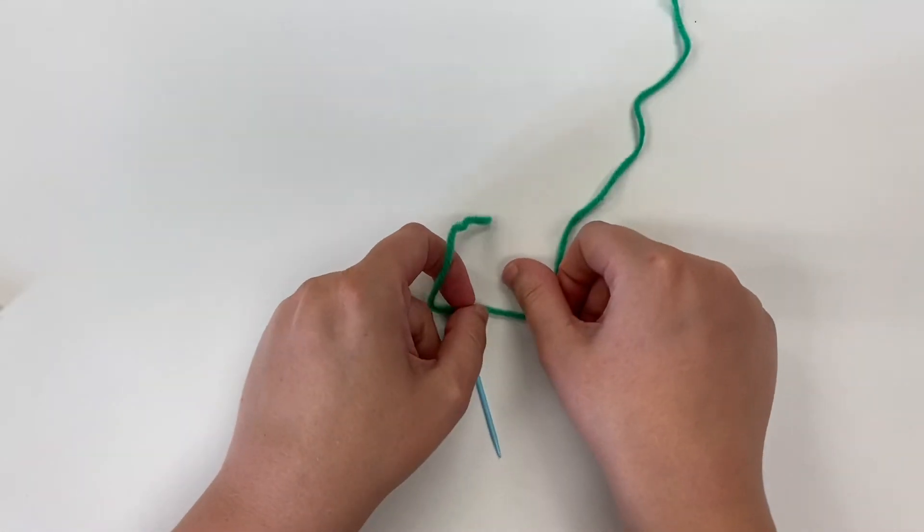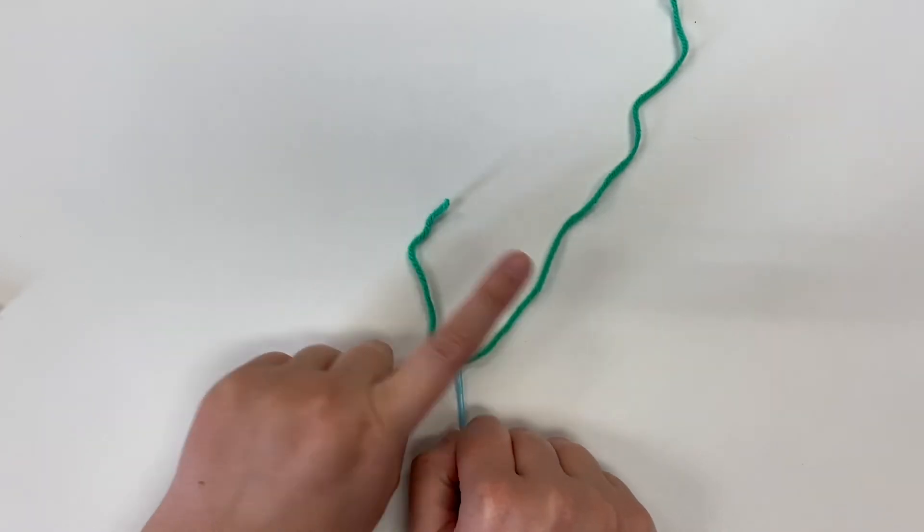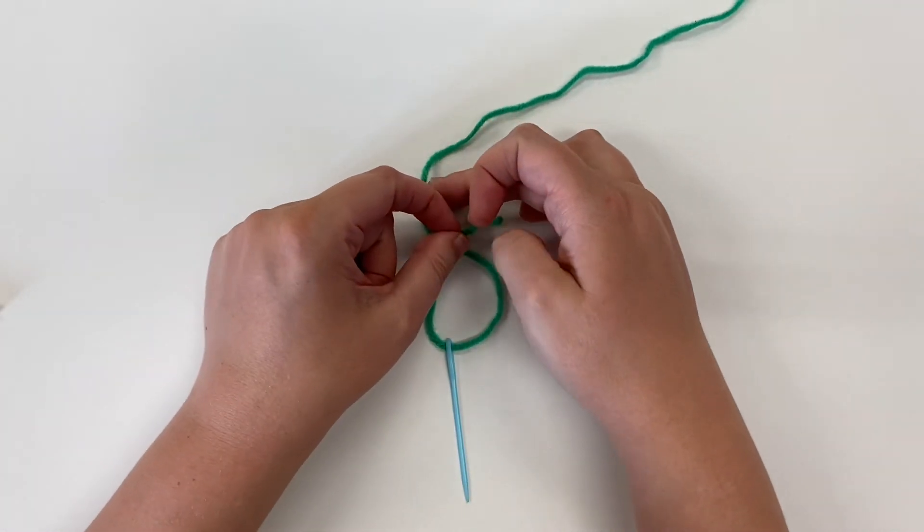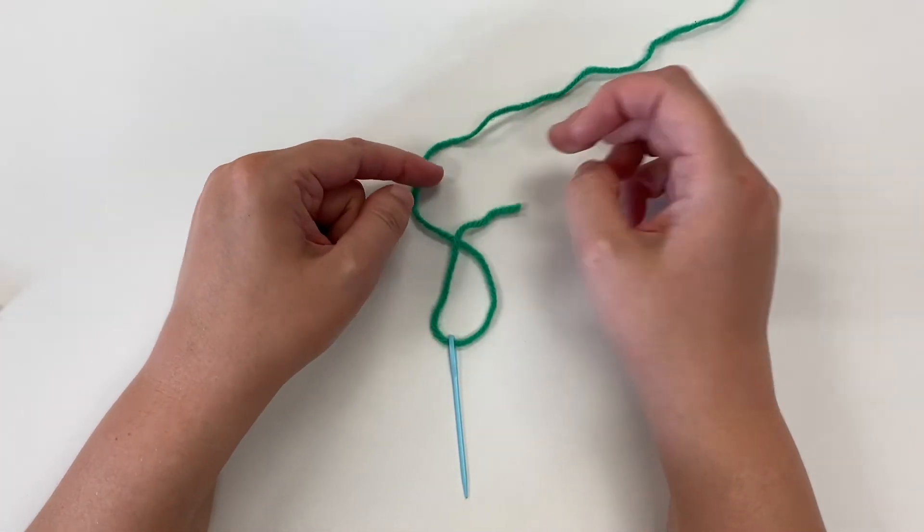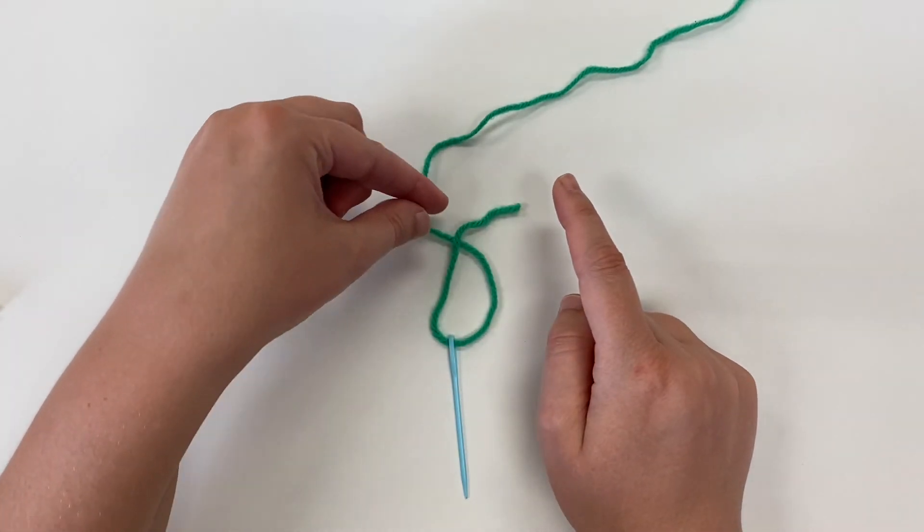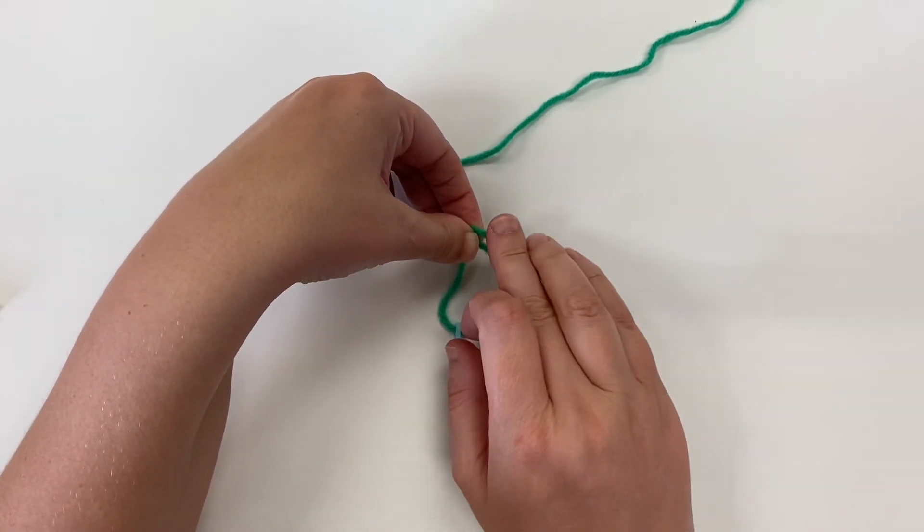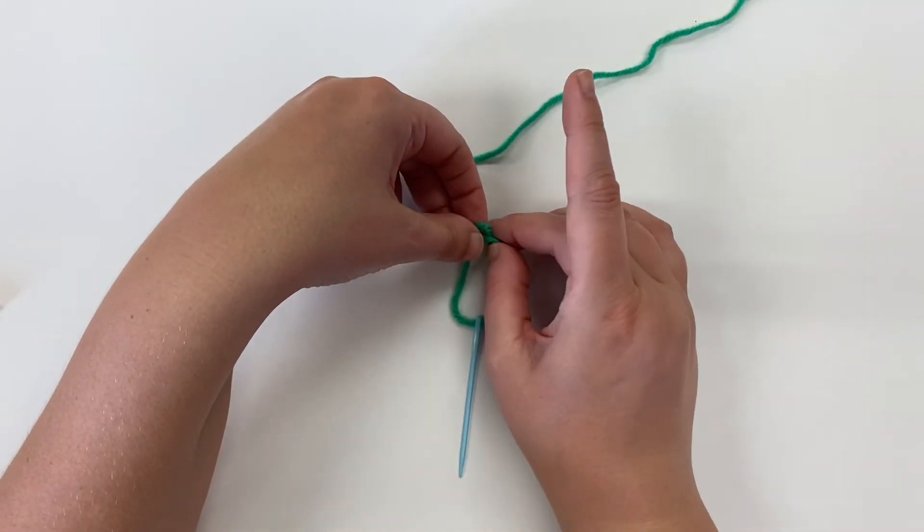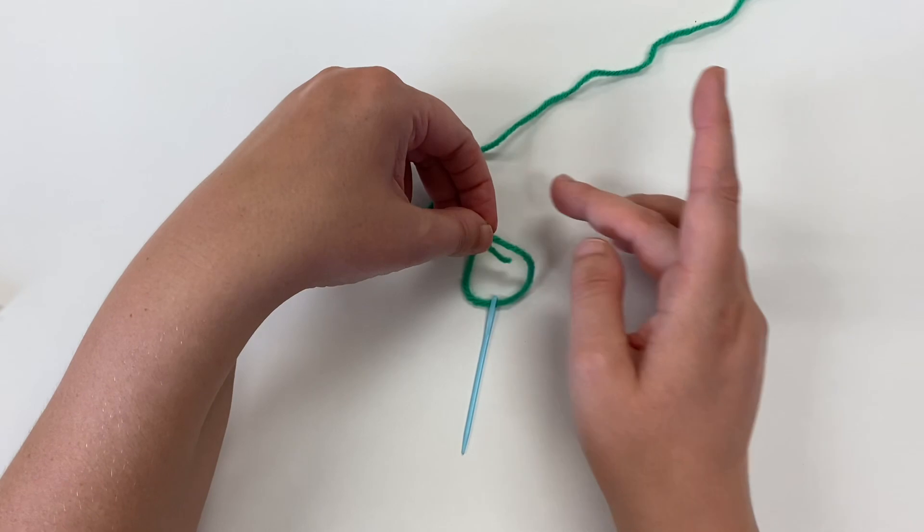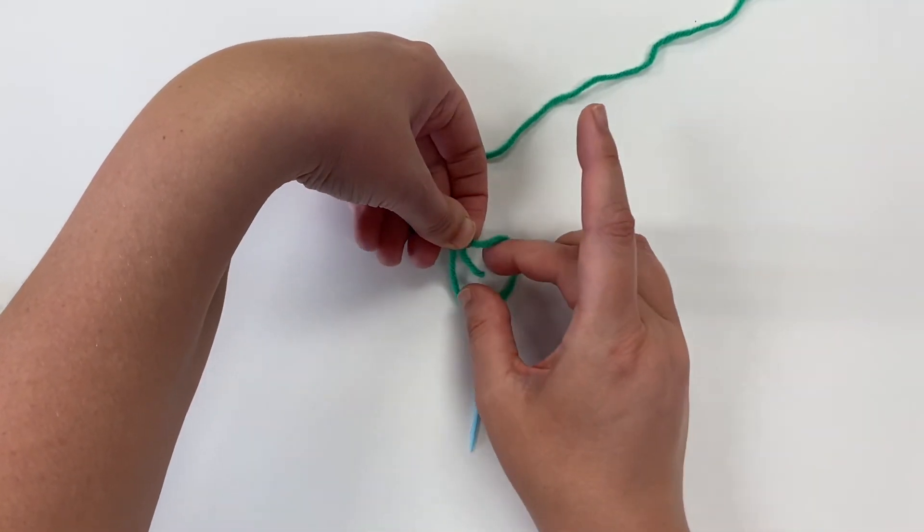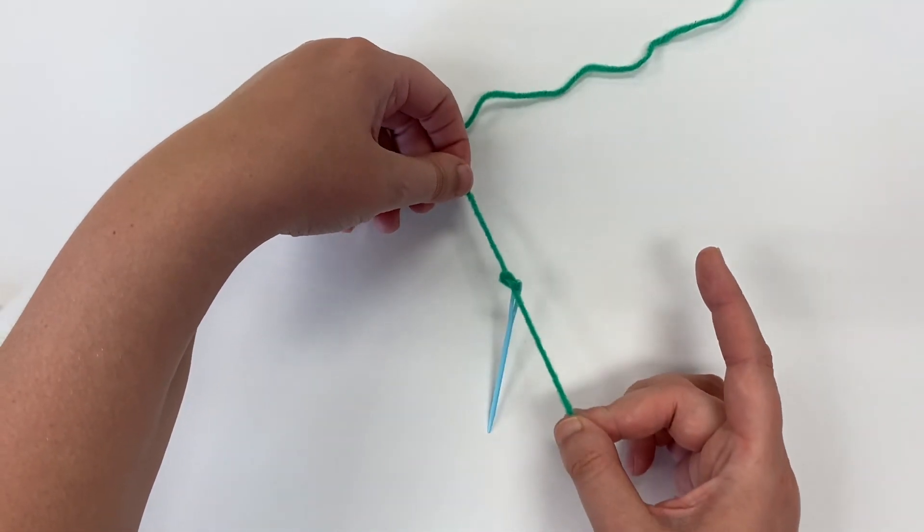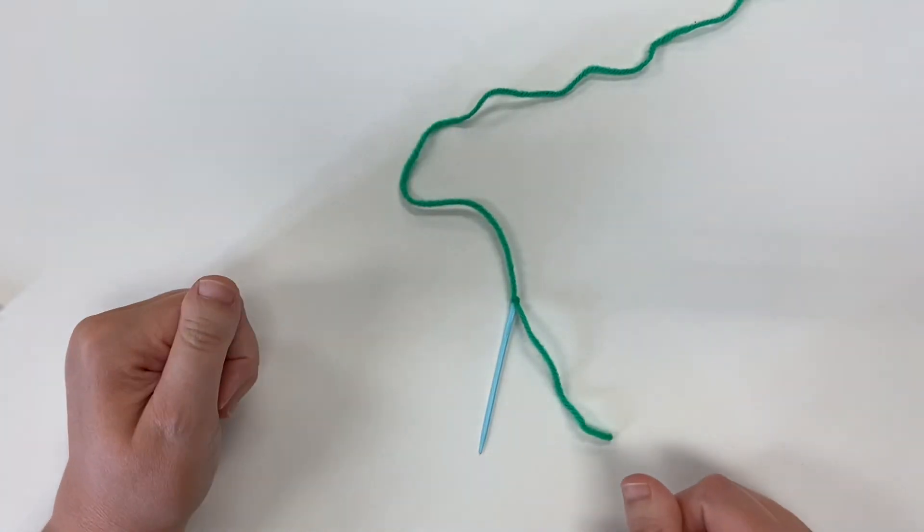Then to tie the knot, I've got my short side and my long side. I'm going to make an X and put the short side on top of the long side. I'm going to pinch the middle of the X and pick it up, then I'm going to fold that tail underneath and pull the tail through. That makes a knot.